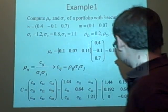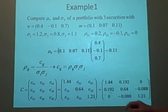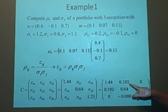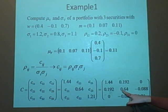Which will give you the matrix, 1.44, 0.1920, minus 0.132, minus 0.132, 0.64, minus 0.0880, and 0, minus 0.088, 1.21.